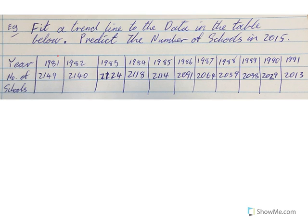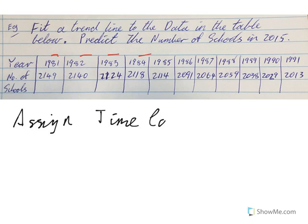With our year data we've got some pretty big numbers. We can use these numbers if we want, but often what we'll do is assign a time code — it just makes our working a bit more simple. In this case it's not essential, but we might assign time code 1 as 1981.